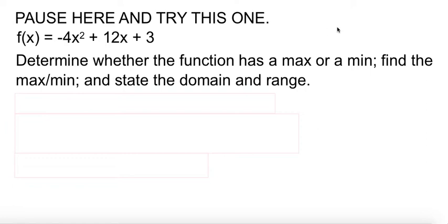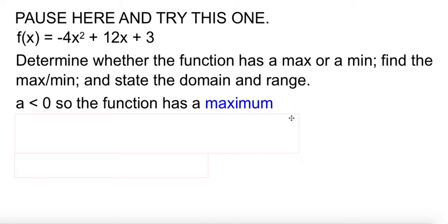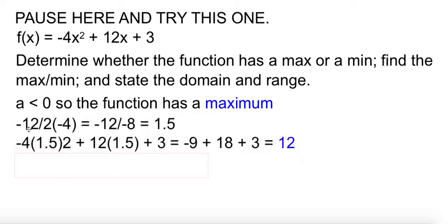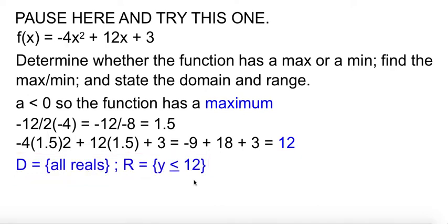We're going to let you pause and practice the same skill. You're going to determine, again, if it's a max or a min. Find it. And then domain and range. Our a is negative 4. Since it's negative, it means we have a maximum. We'll do our opposite b over 2a. Get a value for x to plug back into the function. And my trusty calculator gave me an answer of 12. Since 12 is the maximum, the range is everything below 12. So y is less than or equal to 12. And again, domain is all real.